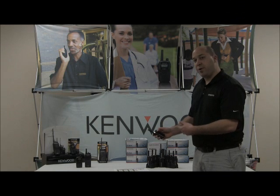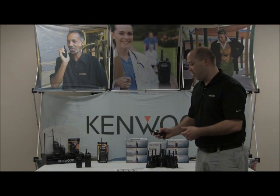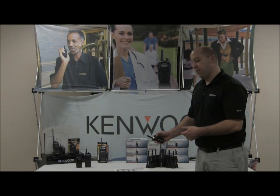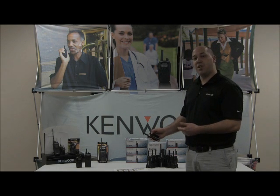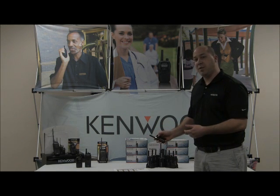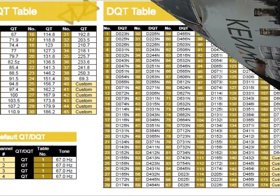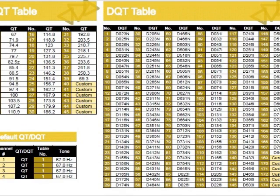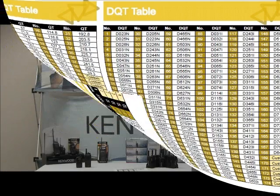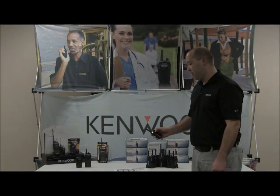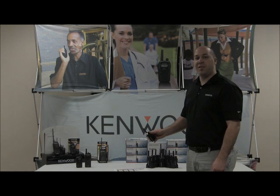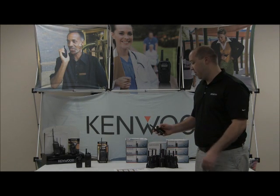Once you enter the frequency you'd like, you'd also enter the privacy code you'd like, which is either a QT or a DQT. These are available as a table in your owner's manual. Use the push-to-talk button to hit enter.